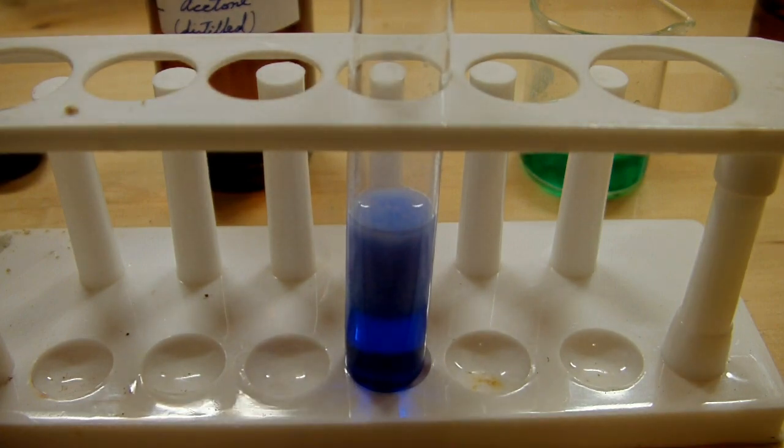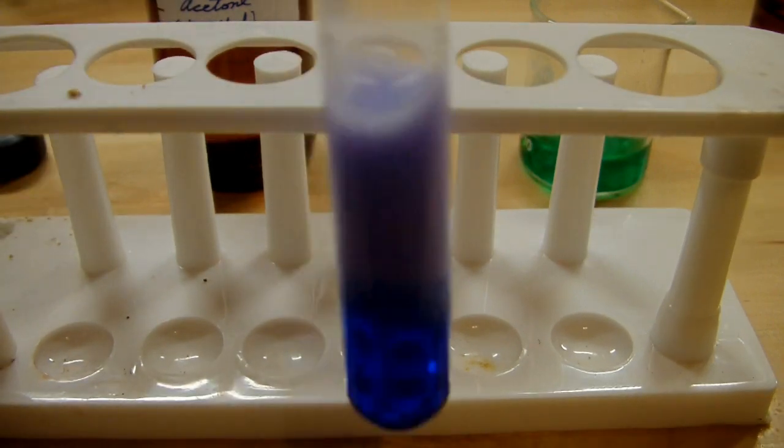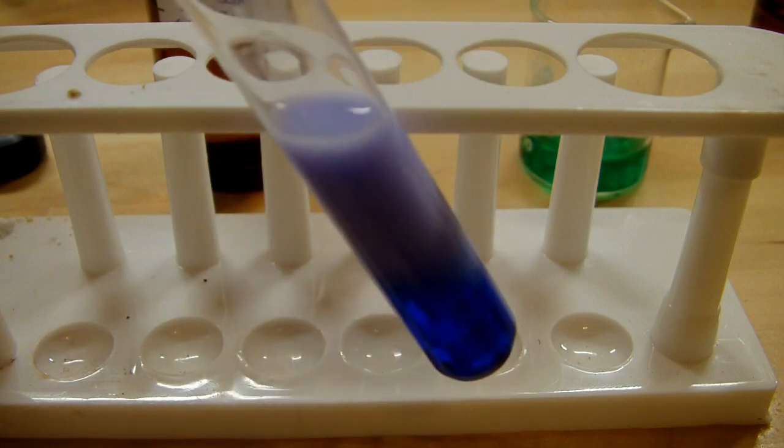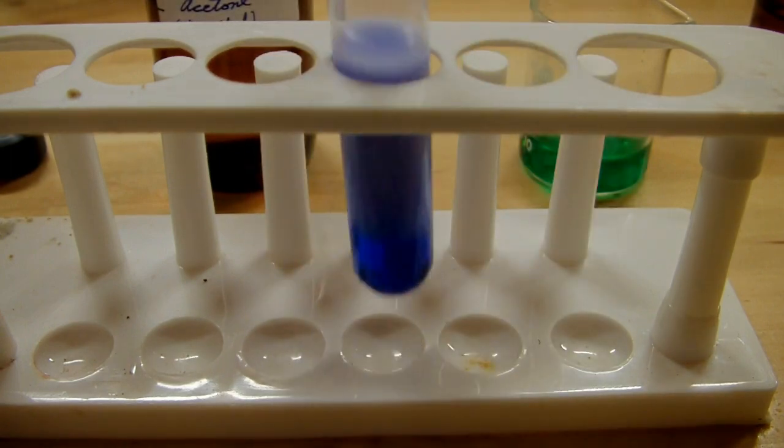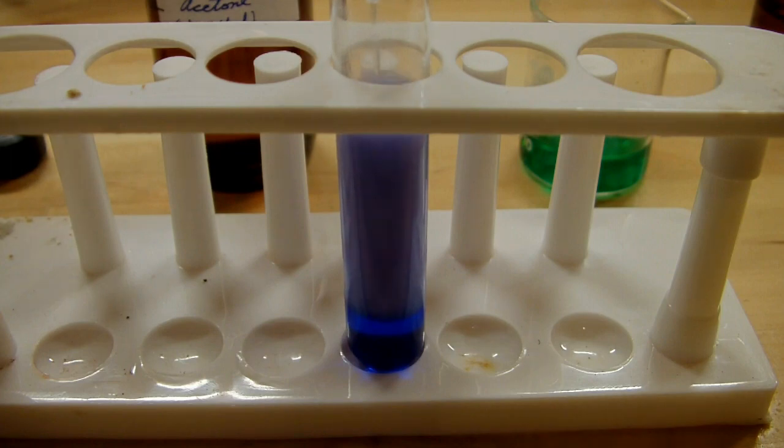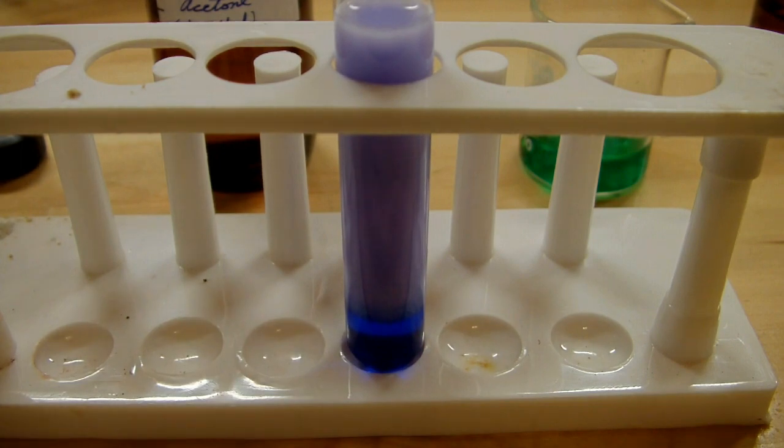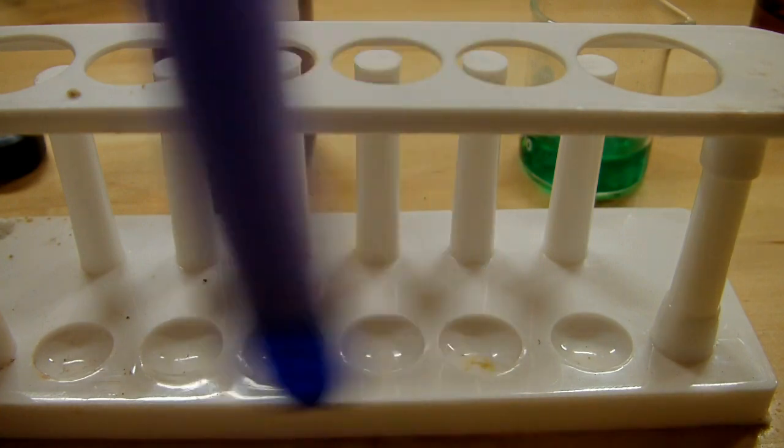So if we keep adding acetone, it's going to push all of this complex out of solution. And we should end up with a nearly colorless solution and a nice lavender precipitate. Now you can start to see the purpley color of it. I'll keep adding a good amount of acetone, quite a bit more than the solution I started with, to push everything out of solution. This is another reason that I chilled everything beforehand, to further reduce the solubility of this compound and get as much as possible out of solution.